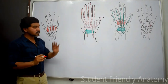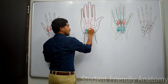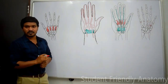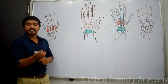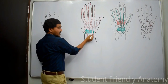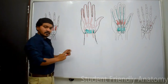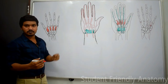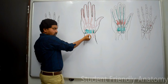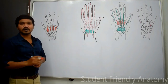The deep palmar arch also gives a recurrent branch, which passes back to anastomose with the anterior carpal arch. The anterior carpal arch is formed by the anterior carpal branches of both the radial and ulnar arteries anastomosing with each other. A similar arrangement exists dorsally.